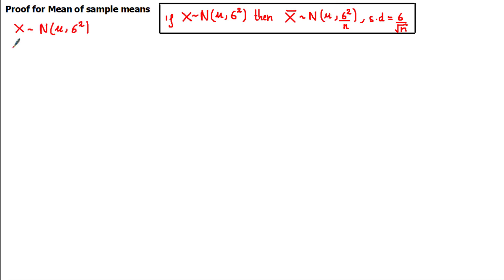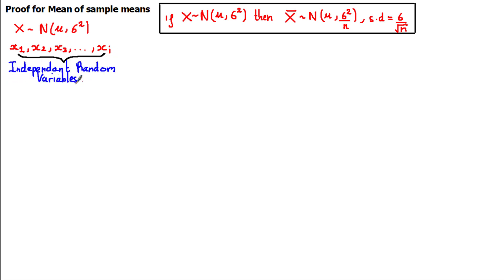Let's assume we have a random variable x which is normally distributed with a mean mu and a variance of sigma squared. We can write a list of the variables that x can take on: x sub 1, x sub 2, all the way up to x sub i, where each observation is an independent random variable that is also normally distributed with the same mean mu.